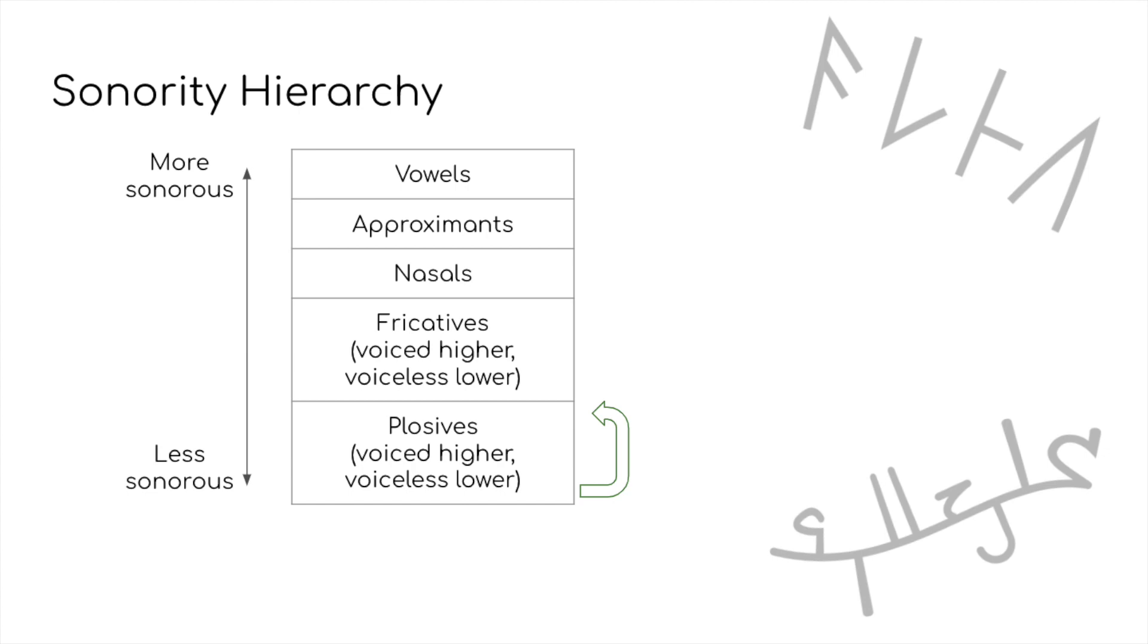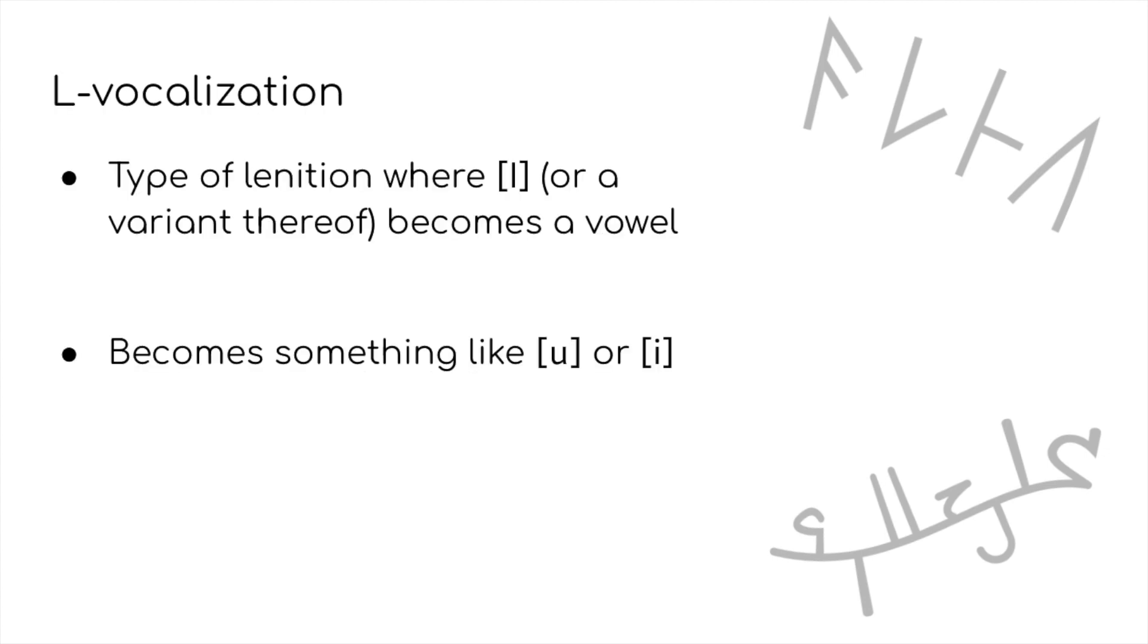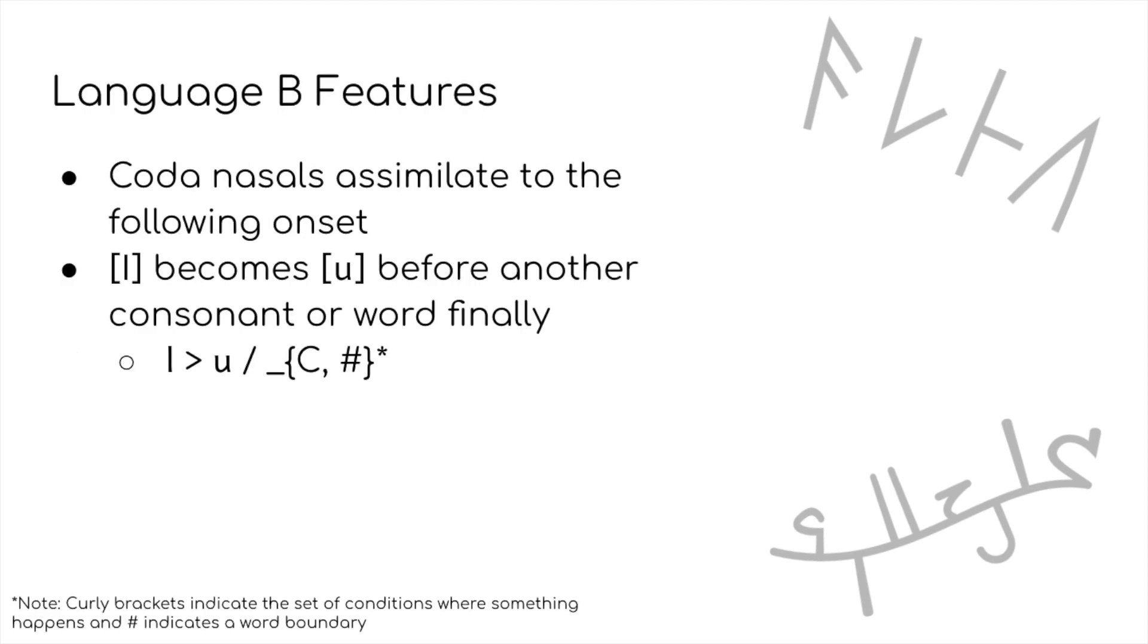Another type of sonorizing lenition is called L vocalization. Here, L, which is already near the top of the sonority hierarchy, just straight up becomes a vowel, usually U or I. Let's add this feature to language B, making coda L become U if in contact with another consonant or word finally.